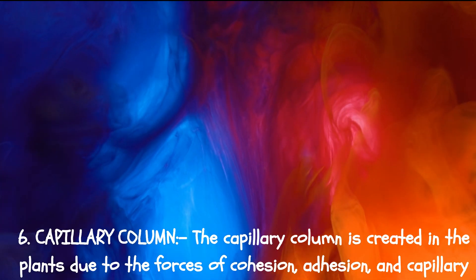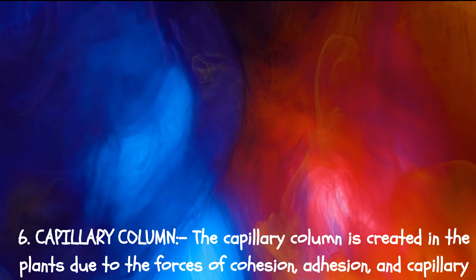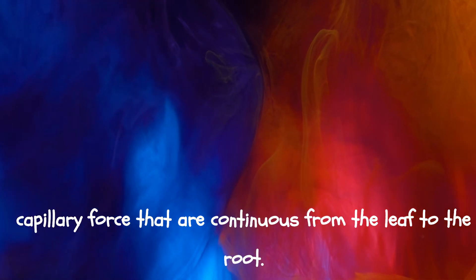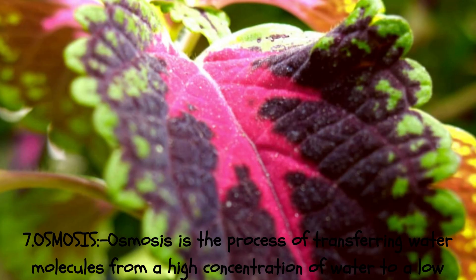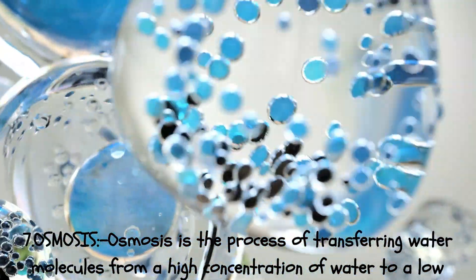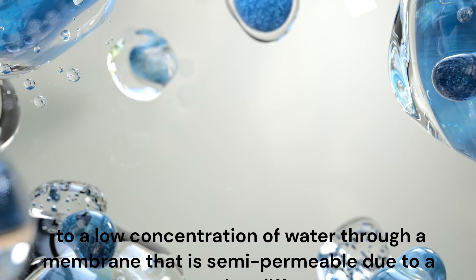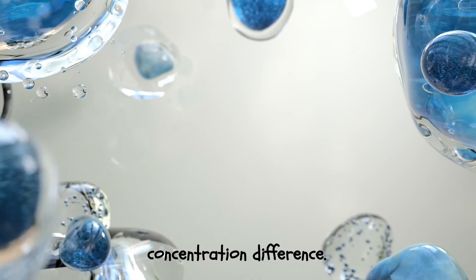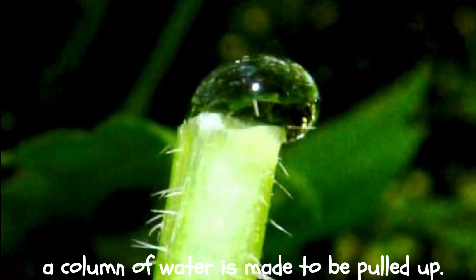6. Capillary. A continuous column is created in plants due to the forces of cohesion, adhesion, and capillary force that are continuous from the leaf to the root. 7. Osmosis is the process of transferring water molecules from a high concentration of water to a low concentration of water through a semi-permeable membrane due to a concentration difference. 8. Xylem vessels. The xylem acts as tubes, having many pores on its sides, and between them, a column of water is made to be pulled up.